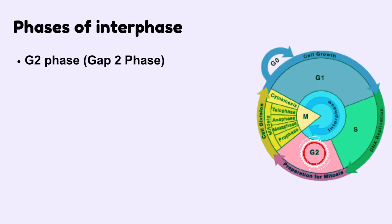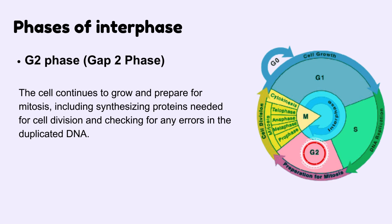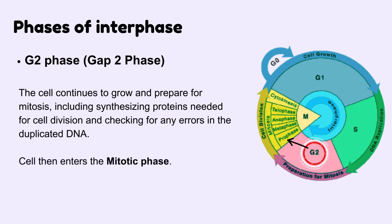G2 phase, also known as gap 2 phase. The cell continues to grow and prepare for mitosis, including synthesizing proteins needed for cell division and checking for any errors in the duplicated DNA. The cell then enters the mitotic phase.